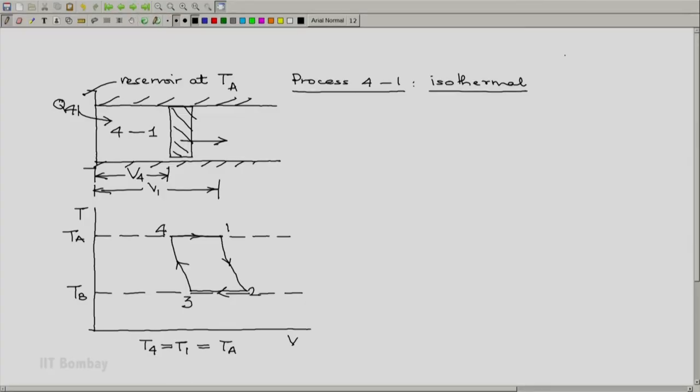The remaining process is process 4-1. It is an isothermal expansion process where the system temperature is maintained at TA. Again, the analysis is similar to that for process 2-3.